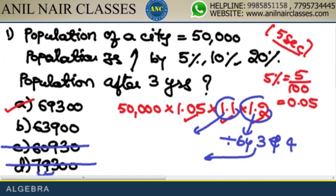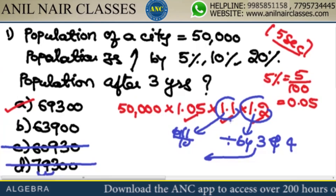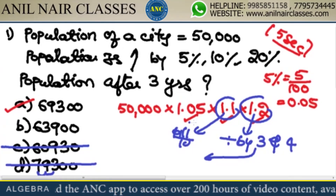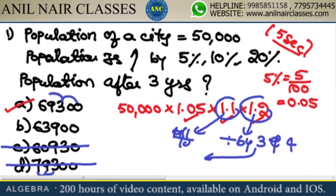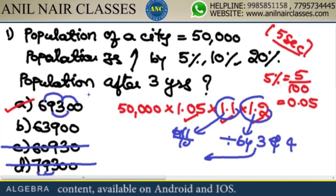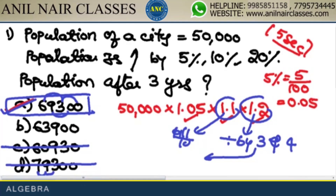1.1 is nothing but 11 by 10, so the answer must be divisible by 11. For 693,000: 0 plus 3 is 3, 3 plus 6 is 9, 9 minus 9 is 0. The answer is divisible by 11. Therefore the answer is 693,000.